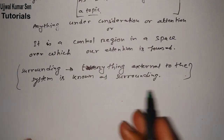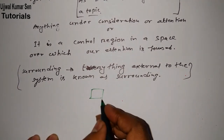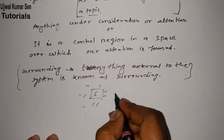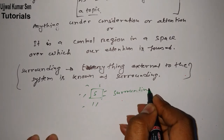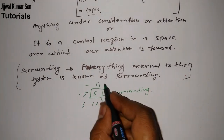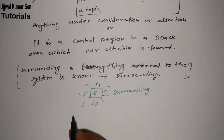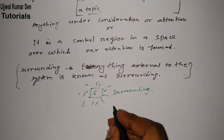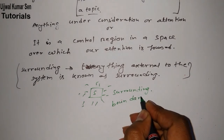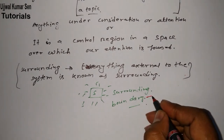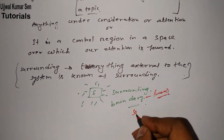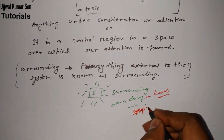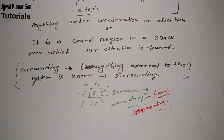The most important thing is: what separates us from system to surrounding? Suppose that we are working here — this is the system — and other than this system there is the surrounding. So what is separating the system from the surrounding? That is called the boundary. The boundary is just like a wall — it separates the system from the surrounding.